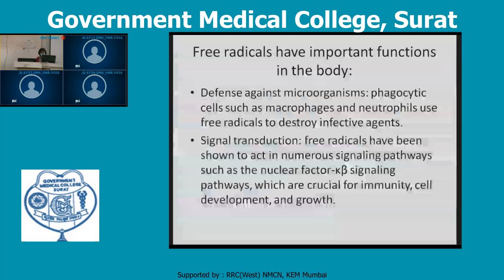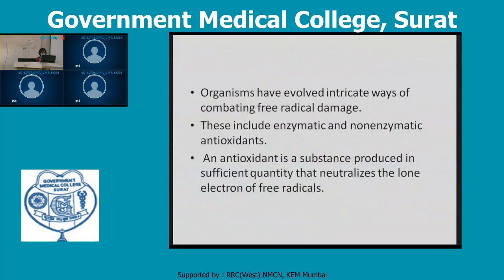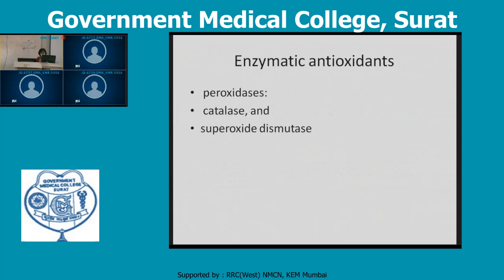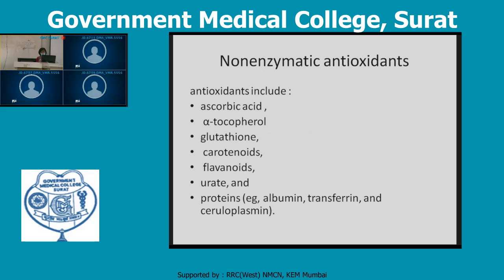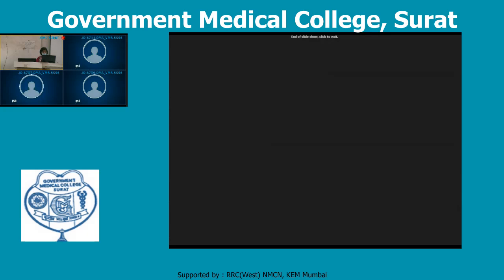Free radicals can be counteracted by antioxidants. Antioxidants are substances produced in sufficient quantity to neutralize the lone electron of free radicals. There are enzymatic antioxidants — such as peroxidases, catalase, and superoxide dismutase — and non-enzymatic antioxidants — such as ascorbic acid, alpha-tocopherol, glutathione, carotenoids, flavonoids, urates, and proteins.